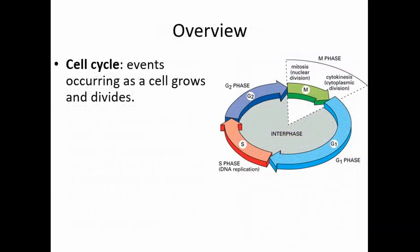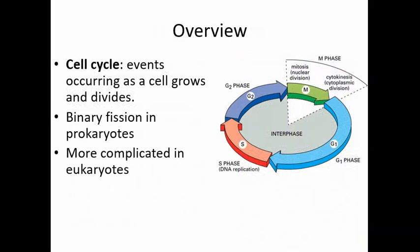As an overview, there is a cell cycle — the events occurring as a cell grows and divides. For prokaryotes, the bacteria, we simply call this binary fission, and it's a more simple process. It's much more complicated in eukaryotes.